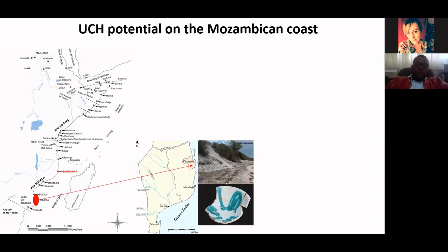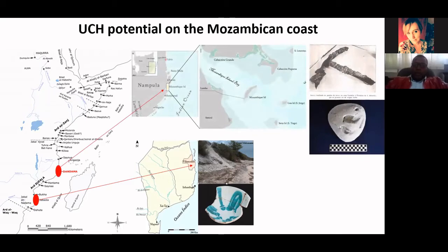Another area that was really important on the Mozambican coast, located in the north, is Mozambique Island in Nampula province. It is a very small island — only three kilometers by 200 to 500 meters. But the kind of trade carried out there shows a lot of material that witnessed the commerce activity happening on the island. During the colonial period, some artifacts were located, including what was described as an Arabic anchor, and recently a stone anchor was found underwater.